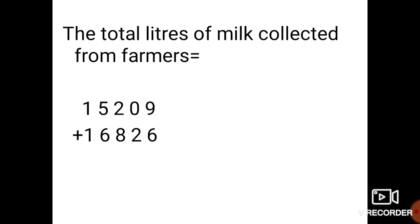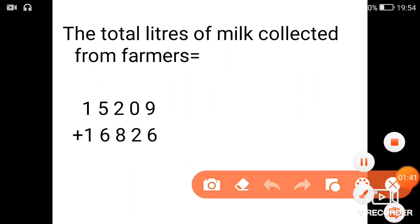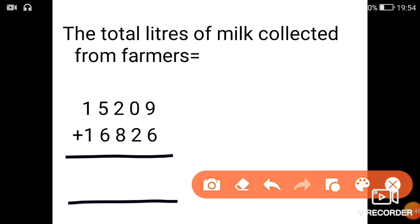Second problem: a cooperative milk dairy collects 15,209 litres of milk from farmers in a week and 16,826 litres of milk in the next week. How many litres of milk was collected from the farmers in 2 weeks we need to find. So first we'll write down the given data, that is the number of litres collected in a week and in the next week. Now we will add both the quantity of litres of milk in order to get the total number of milk collected from the farmers.